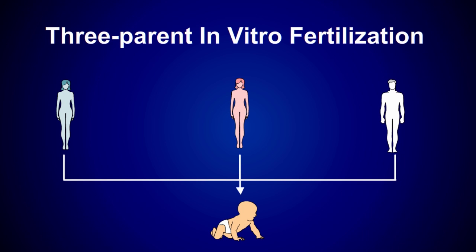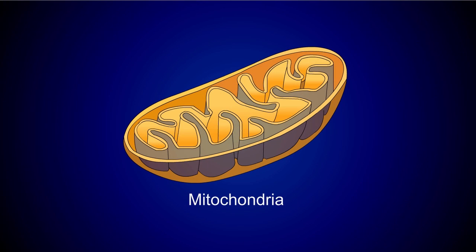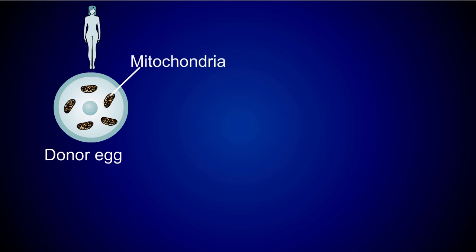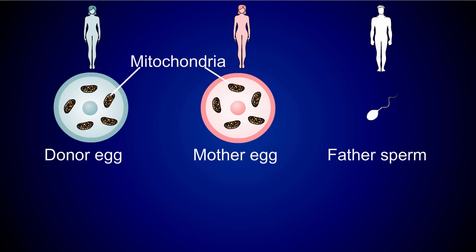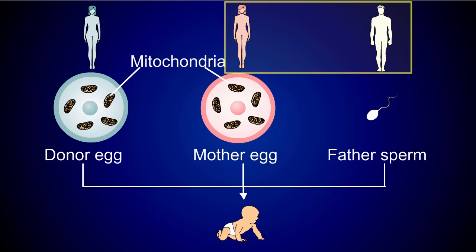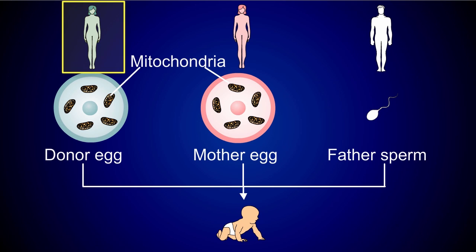Three-parent in vitro fertilization is a technique intended to prevent diseases caused by defective genes located in mitochondria. Because a donor egg is needed, as well as genetic information from a mother and a father, the resulting baby will technically have three parents. The vast majority of the DNA makeup of the child will come from the mother and the father, but since another woman's egg was used, it contains a handful of her genes in the mitochondria of that cell.